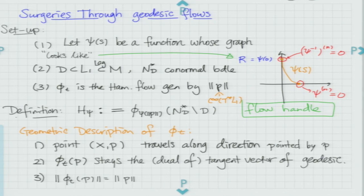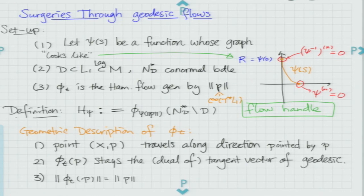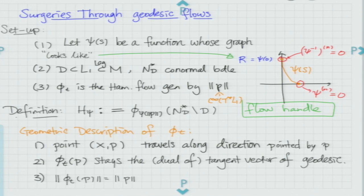The second piece of data is a symplectic manifold with a Lagrangian submanifold having some smooth submanifold, and you form a conormal bundle in its Weinstein neighborhood. The third piece of data is that you use phi_t, the Hamiltonian flow generated by the norm of the cotangent vector, which is a smooth function in the Weinstein neighborhood of Lagrangian L1. This H_psi is just the geodesic flow cut off by the psi function: near the zero section it can go very far, but outside it just doesn't run at all.